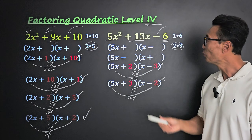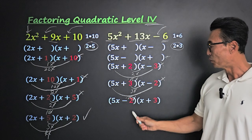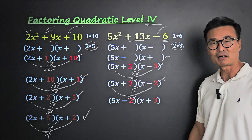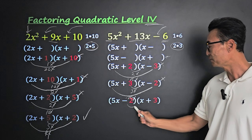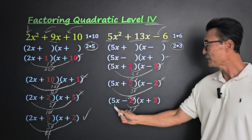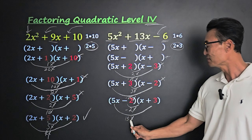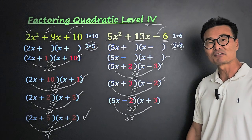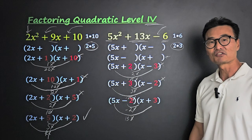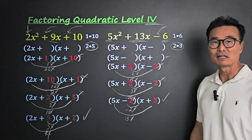Now let's try the minus-plus arrangement, putting 2 after the negative and 3 after the positive. Negative 2 times x is negative 2x, and 5x times 3 is 15x. Adding 15x and negative 2x gives positive 13x — that's what we want. Therefore, this is our answer.